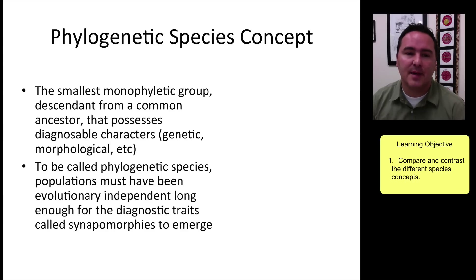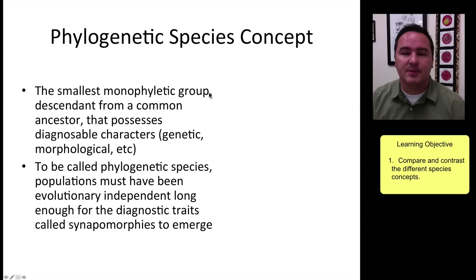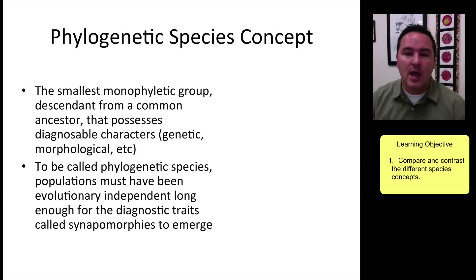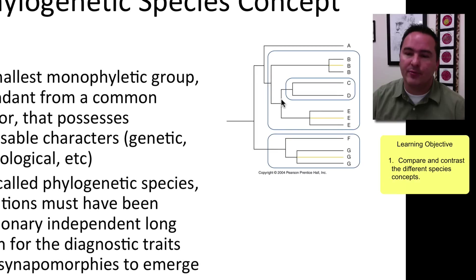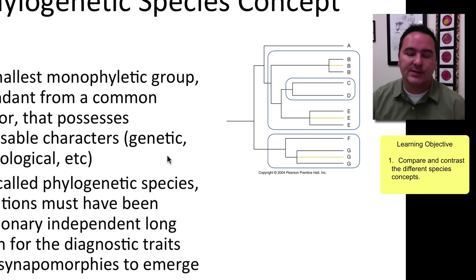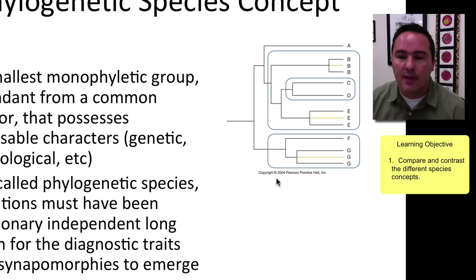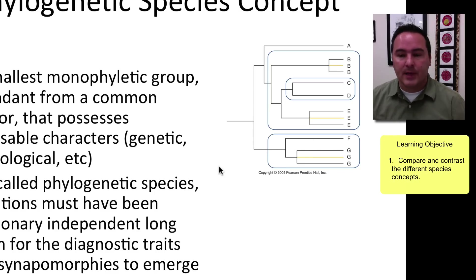Another species concept becoming more widely accepted is the phylogenetic species concept. This concept is based on using phylogenetics — the science of creating an evolutionary tree to represent relationships — to look for natural groups. You draw circles around branches on the phylogenetic tree, and that circle becomes a species.